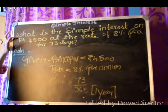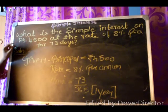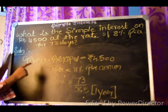So the question is what is the simple interest on rupees 4500 at the rate of 8% per annum for 73 days.